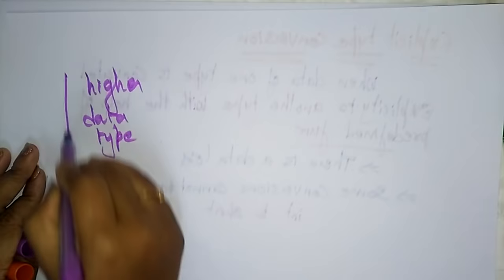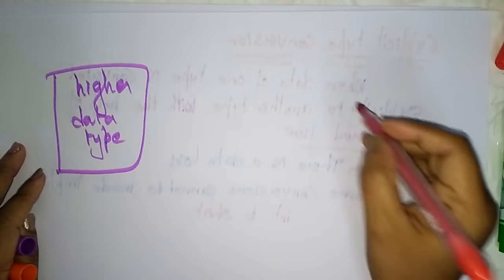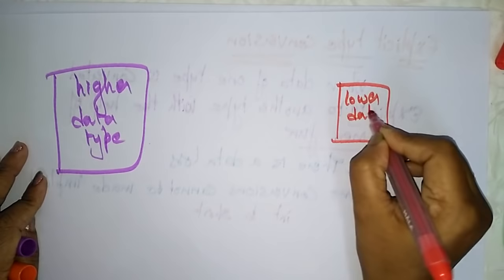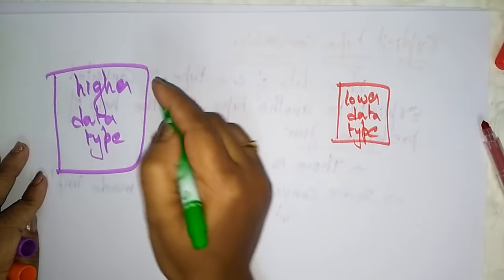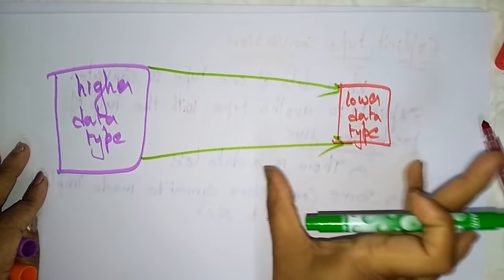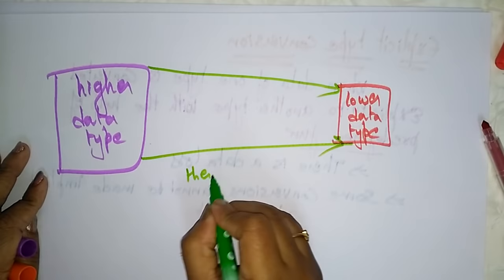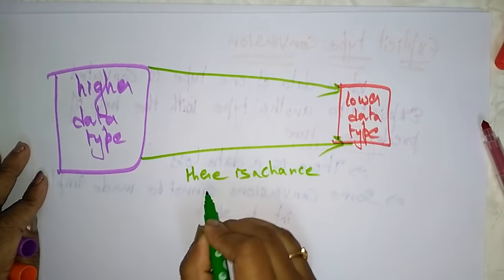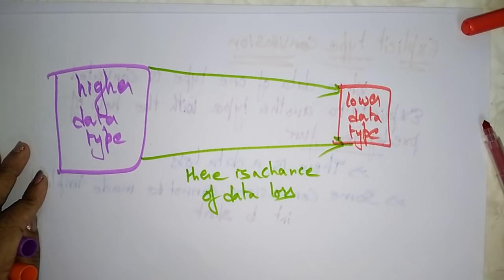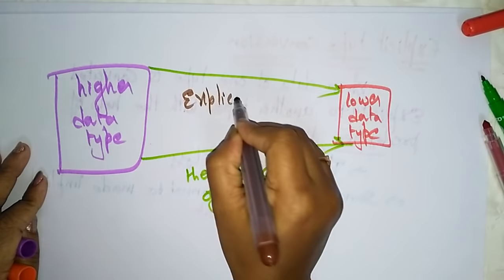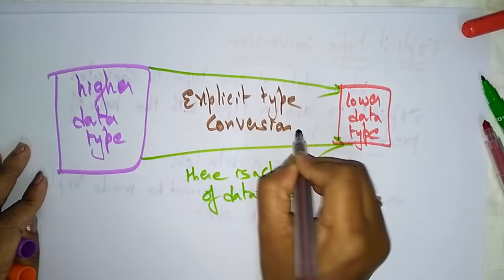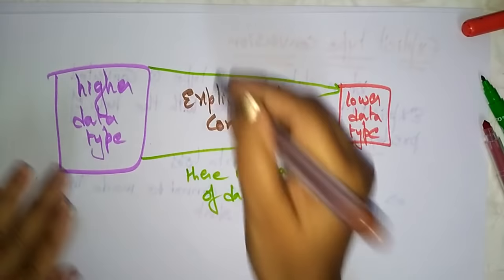In the diagram, the higher data type is at the top and the lower data type is at the bottom. When you try to convert a higher data type value to a lower data type value — going from higher to lower — there is a chance of data loss. This conversion process is called explicit type conversion, and it is done forcefully.